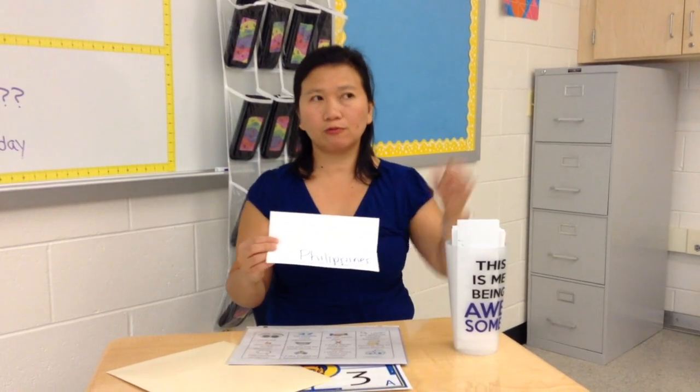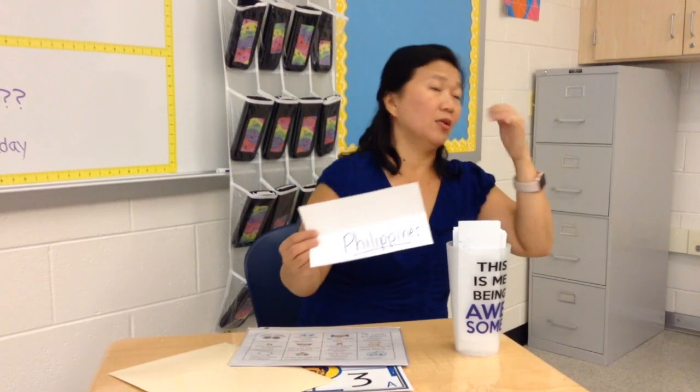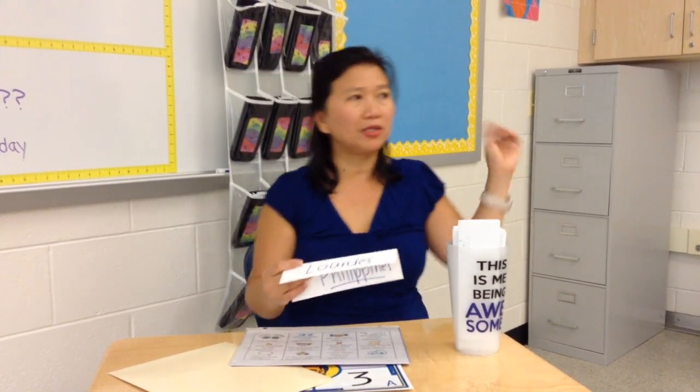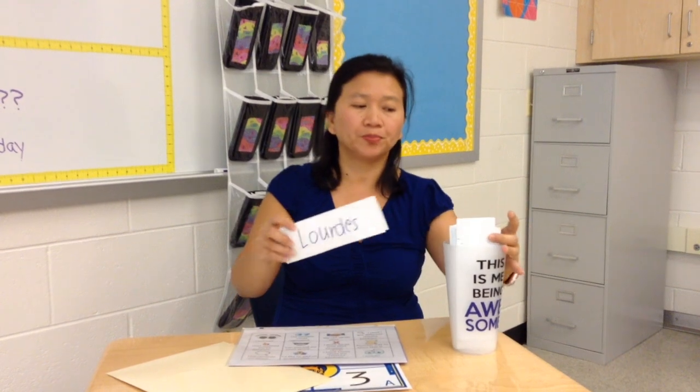I use an 'around the world' activity — I call it the destination — where I use the country students are originally from and include an attraction. They're very proud to share that. For a check for understanding, I create leveled boxes: 'I got this', 'kind of', 'I really have no idea.' I take note of those who have no idea and form a small group with them today while the rest do the regular warm-up.